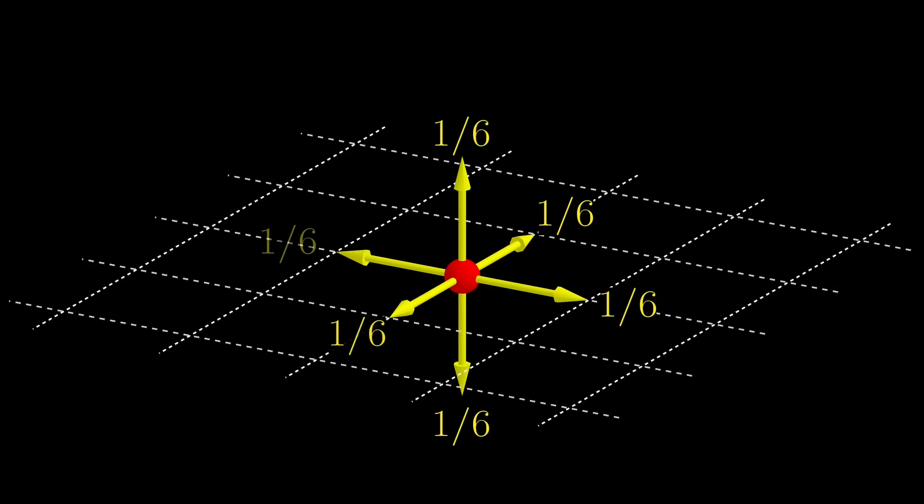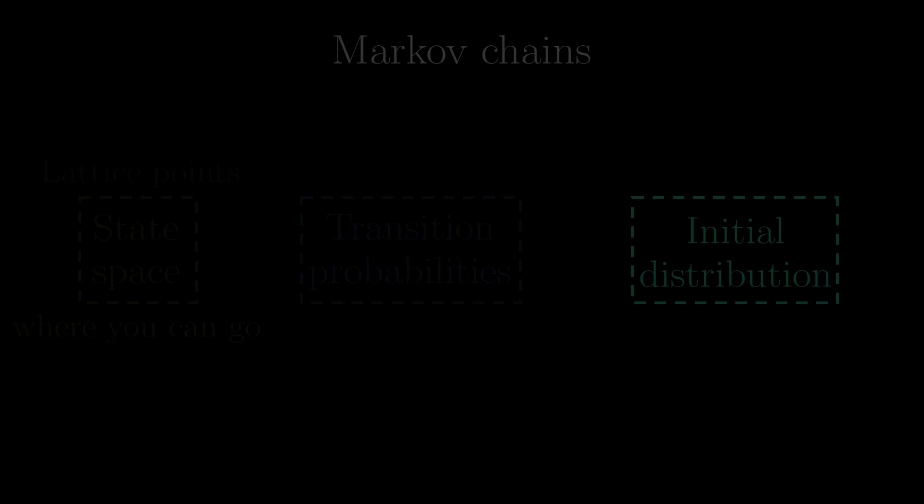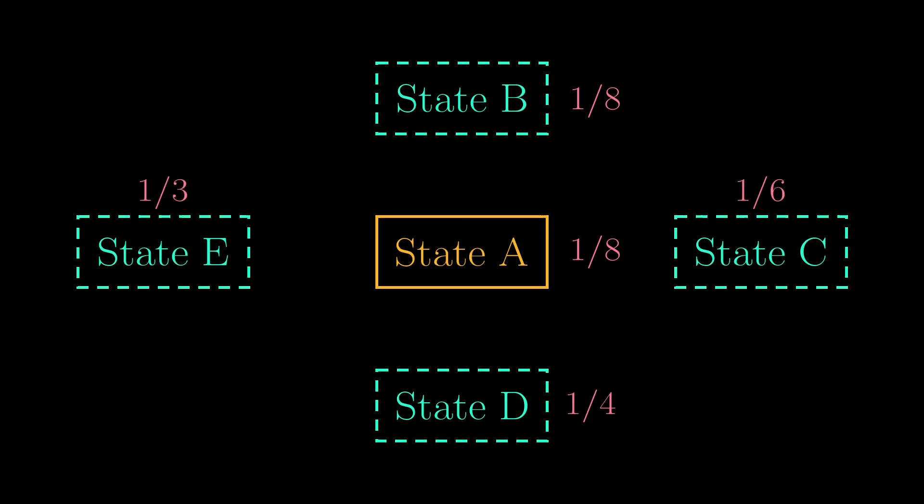The final thing is the initial distribution. In a general Markov chain, you have the freedom to choose which state to start, and so we can assign a probability to each state, indicating how likely you are to start at that state. In the case of a random walk, we want to definitively start at the origin, i.e., a probability 1 of starting at the origin, and 0 everywhere else.